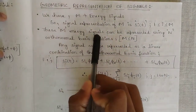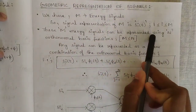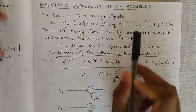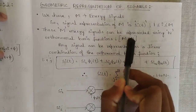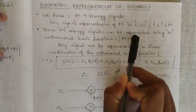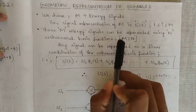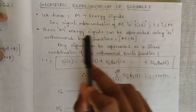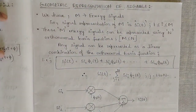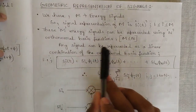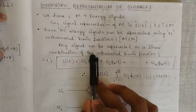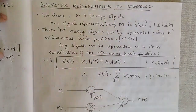These M energy signals can be represented using N orthonormal basis functions, where M is less than or equal to N. So the M energy signals are represented using N orthonormal basis functions, one at a time. Any signal can be represented as a linear combination of the orthonormal basis functions.